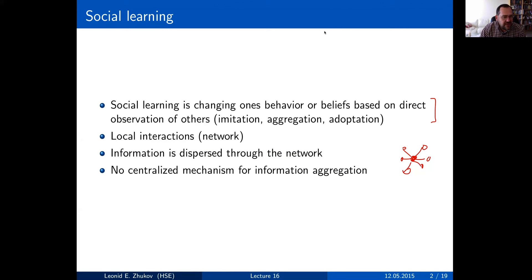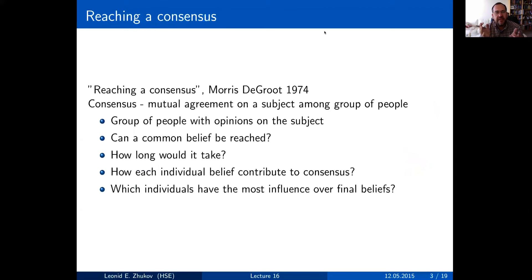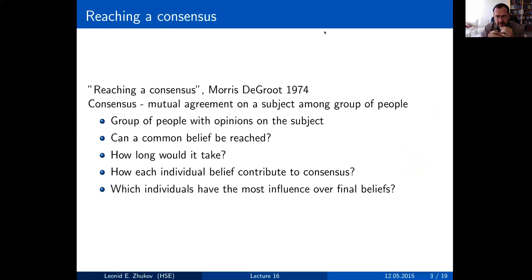That's the idea of social learning: updating your beliefs or behavior based on the beliefs or behavior of people connected to you. In this setting, there is a seminal paper by statistician Maurice DeGroot, published in 1974. It became very popular then, was almost forgotten for a while, but is now a very concise and beautiful model that is completely solvable. People are slowly returning to this model, and its modifications can be a very good place to start for research.